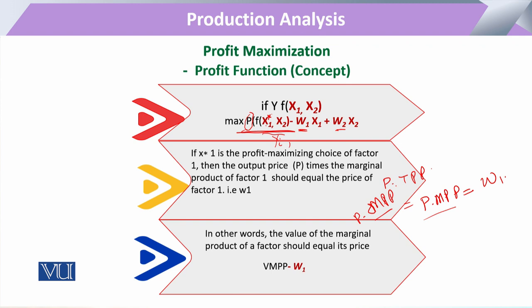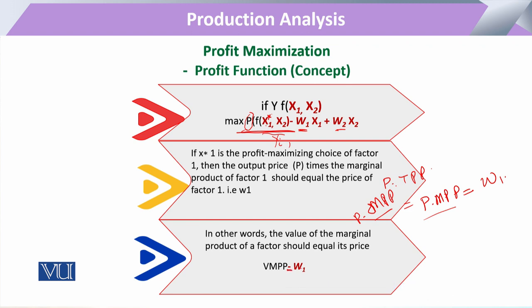This assertion shows explicitly that for any factor used in a production process, if we want to determine its price — whether it is a wage, a rental value, or a capital value — it will be equal to the Value of Marginal Physical Product (VMP). That physical product is what is being produced from the use of that input.